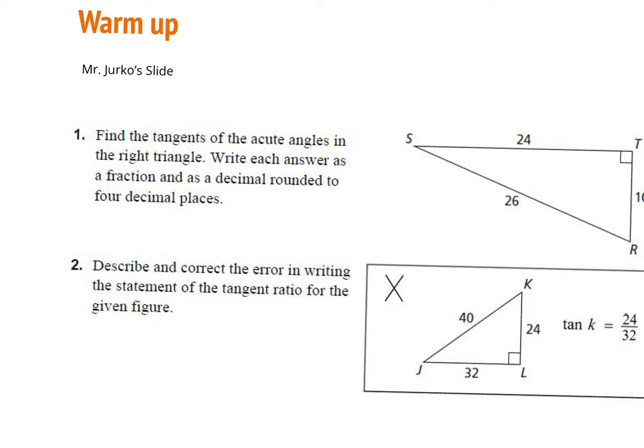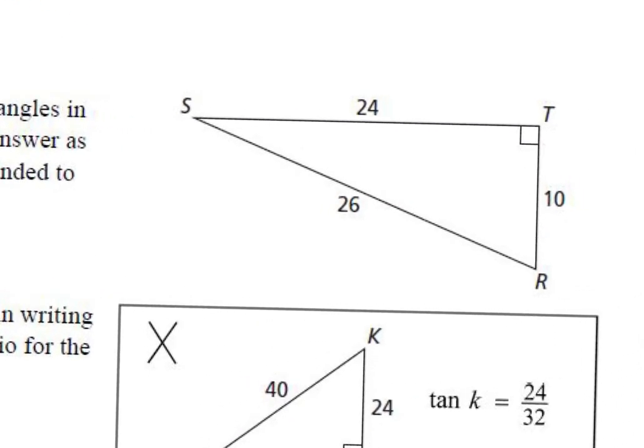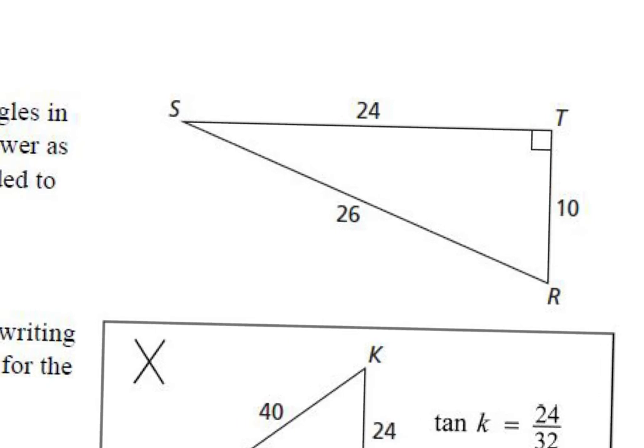Write each answer as a fraction and as a decimal rounded to four decimal places. What are our two acute angles in this first triangle? Zoe says S and R. So S is going to be one acute angle and R is going to be the other one. What is the tangent of S?